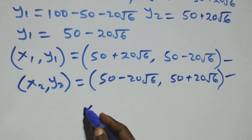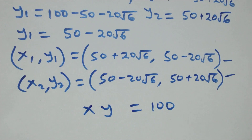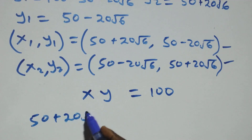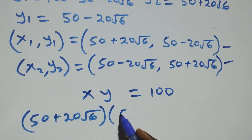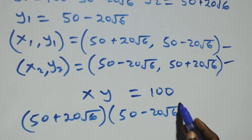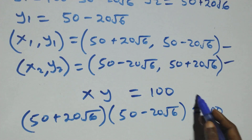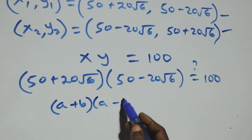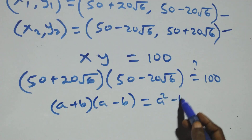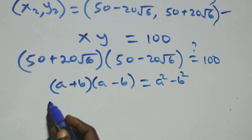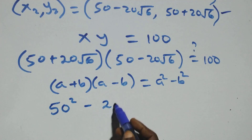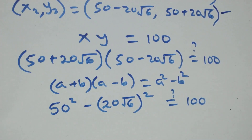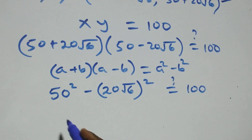For equation two, x times y equals to 100. Multiplying: (50 plus 20 root 6) times (50 minus 20 root 6) should equal 100. We apply the difference of two squares: (a plus b)(a minus b) equals a squared minus b squared. So this becomes 50 squared minus (20 root 6) squared, which equals 100.